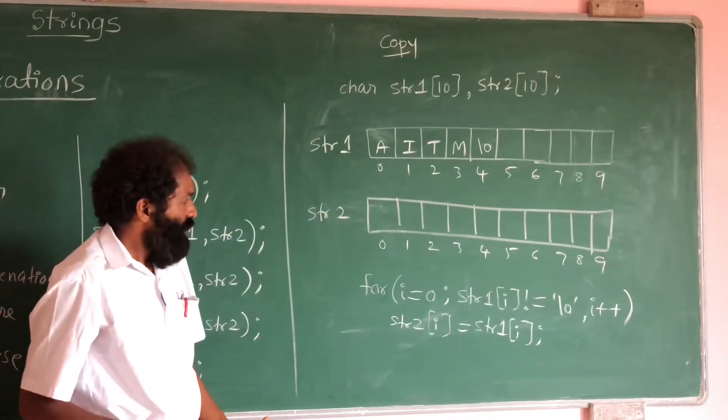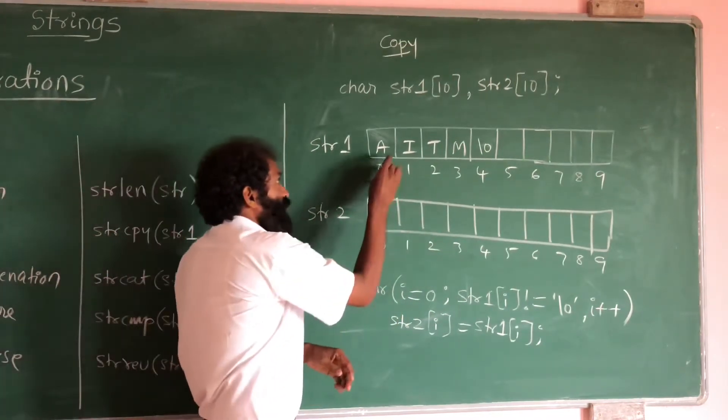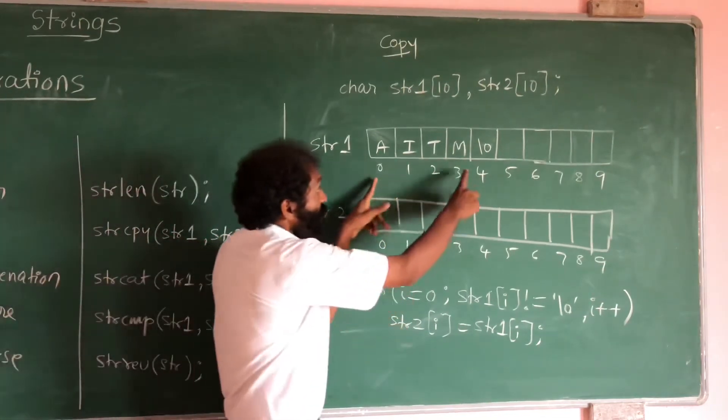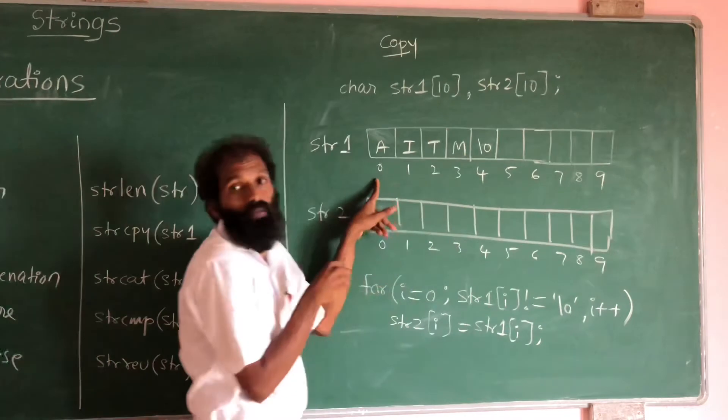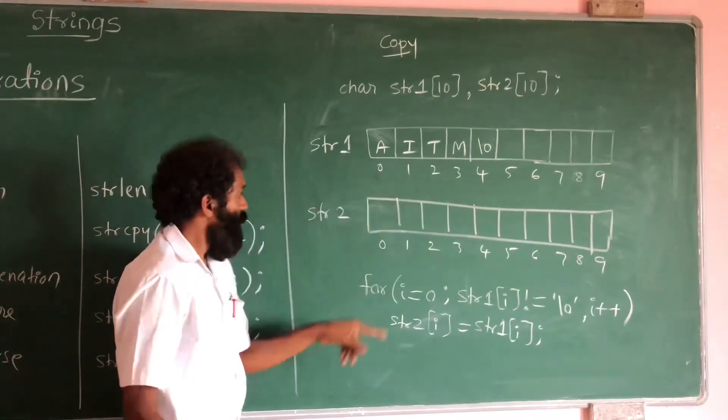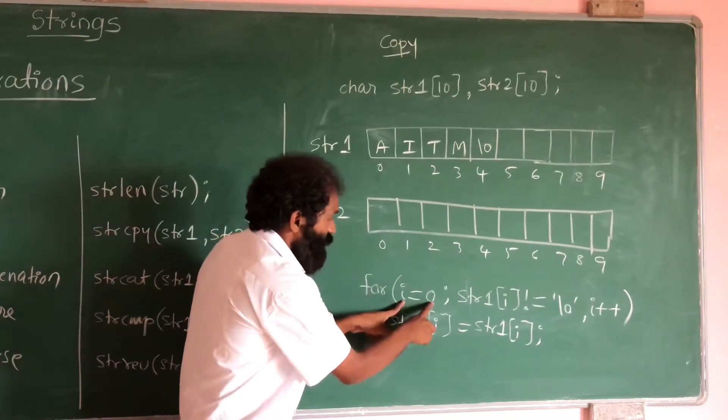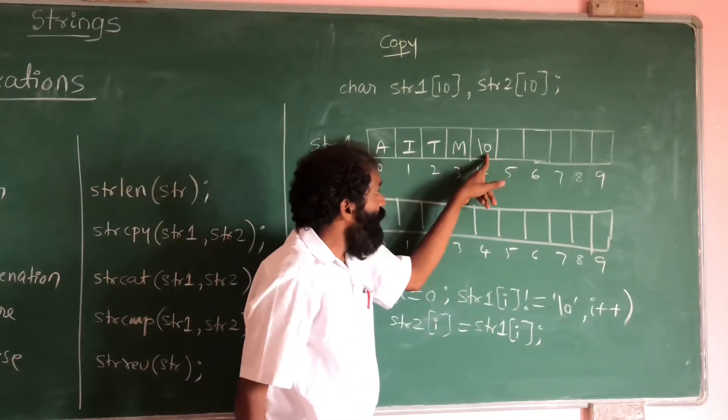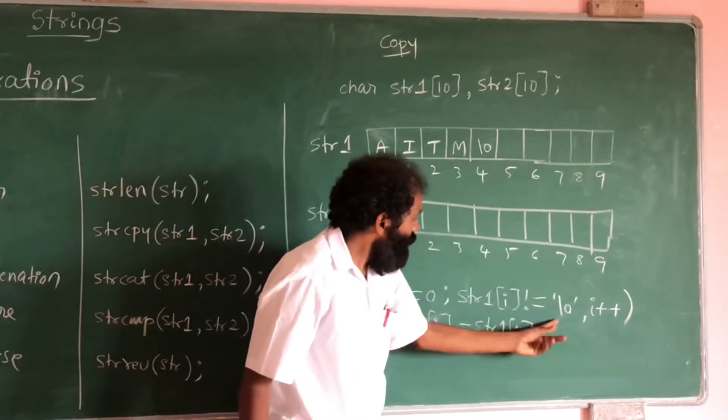What to do? See, the first character we have to copy here, till the last character, all the characters we have to copy. So from 0 to 3 we need to copy. Here I value 0, till we encounter null character we have to copy.